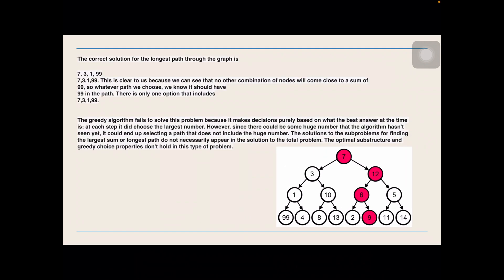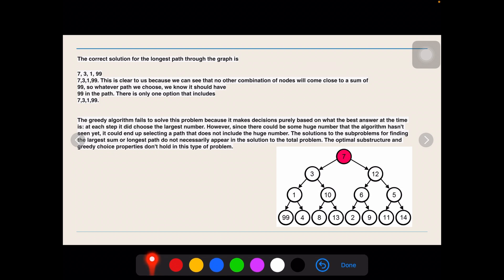This is not the optimum solution. The correct optimal solution is 7, 3, 1 and 99, which is greater than 7, 12, 6 and 9. Now, this is clear to us because we see no other combination of nodes which will come close to a sum of 99. So, whatever path we choose, we know it should have 99 in its path. This is the only option that includes 99.